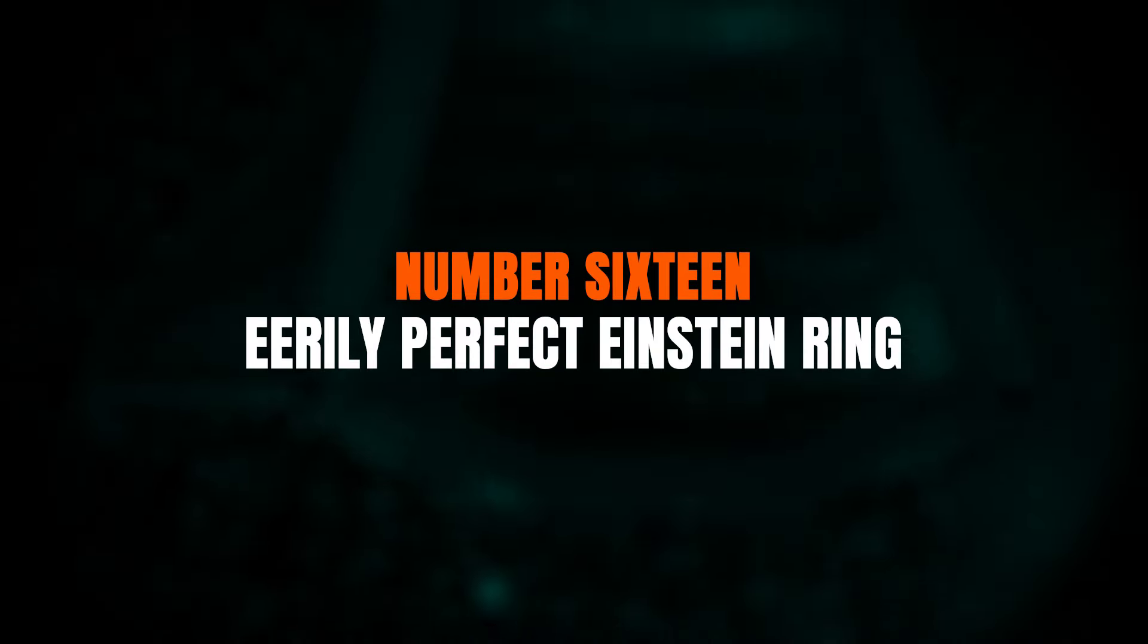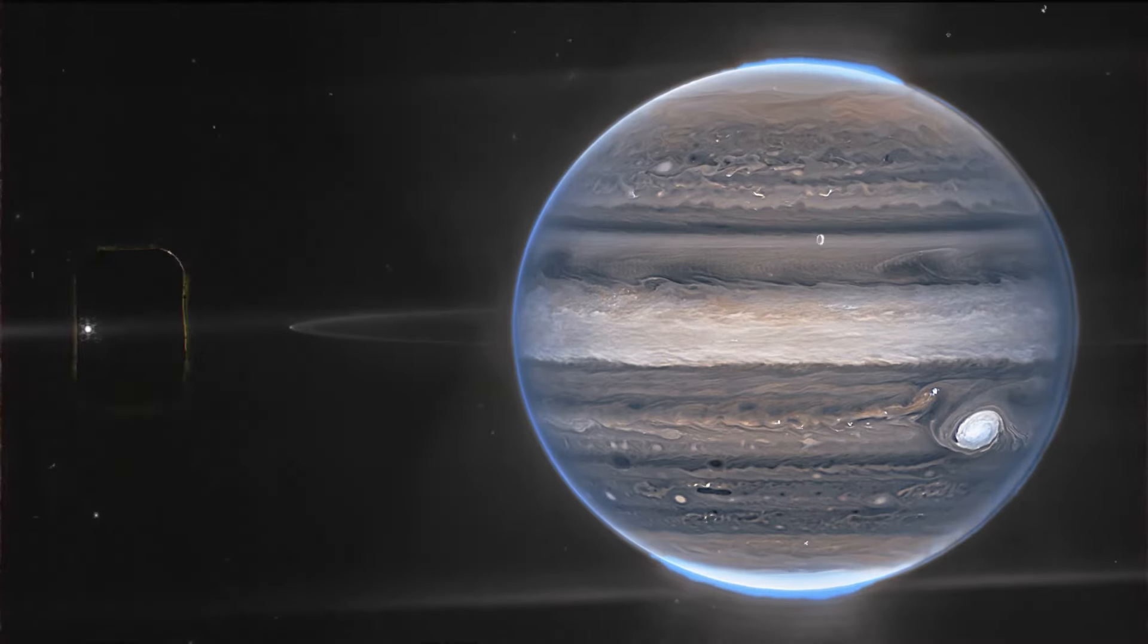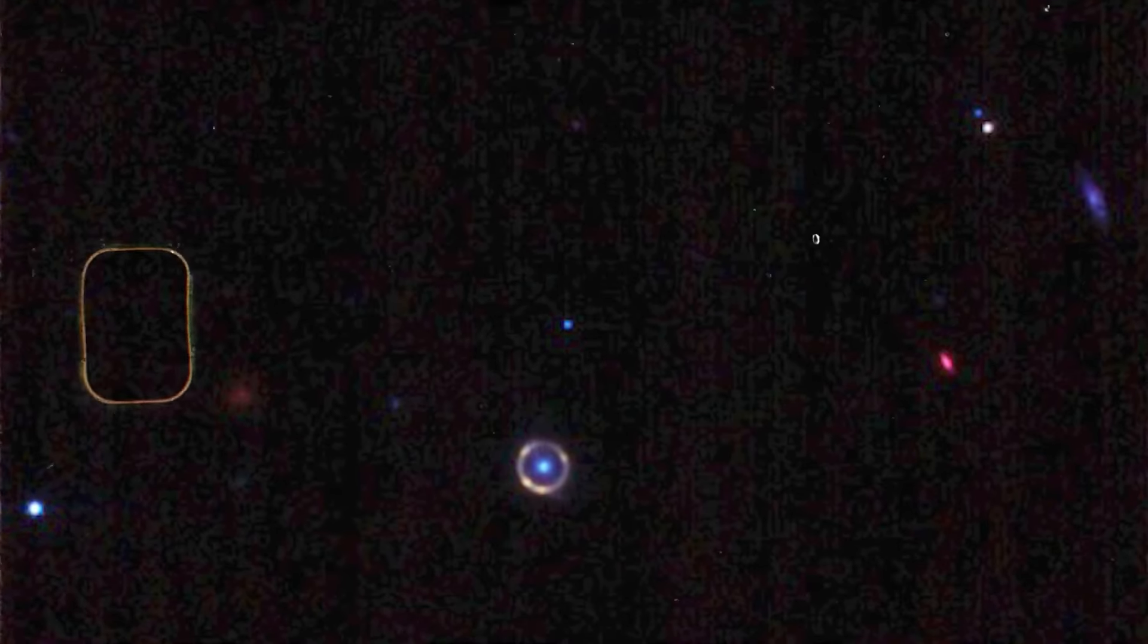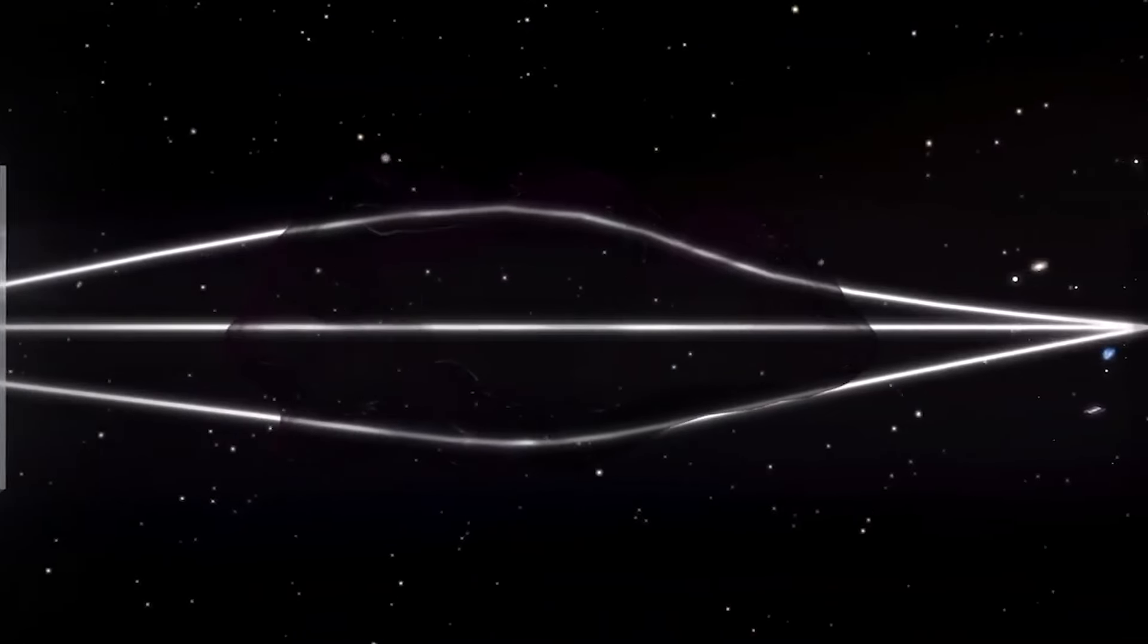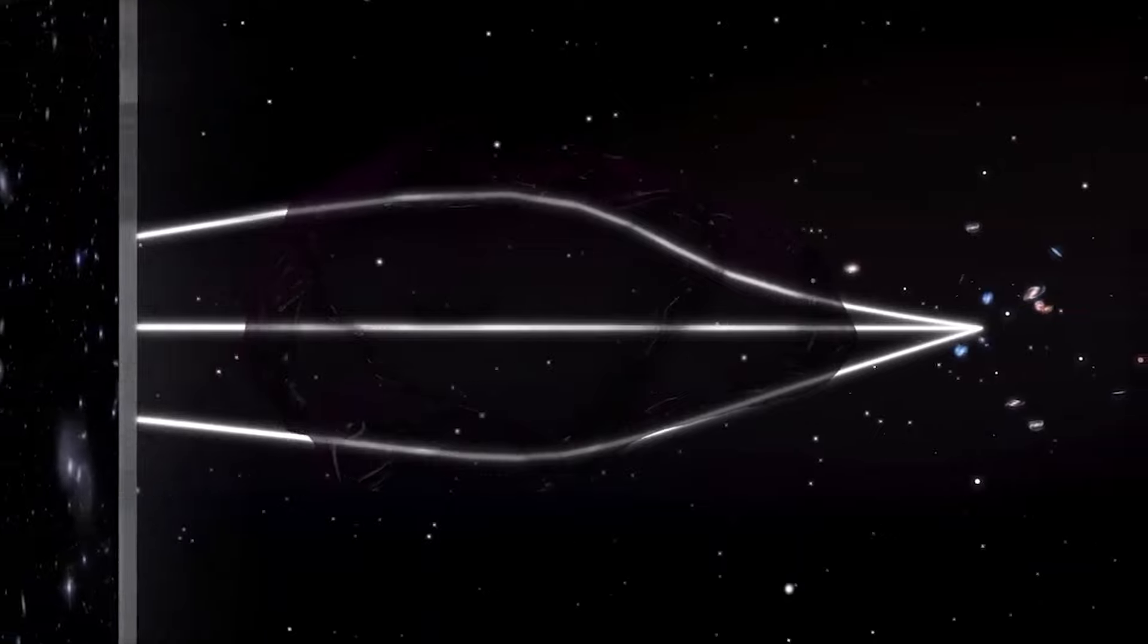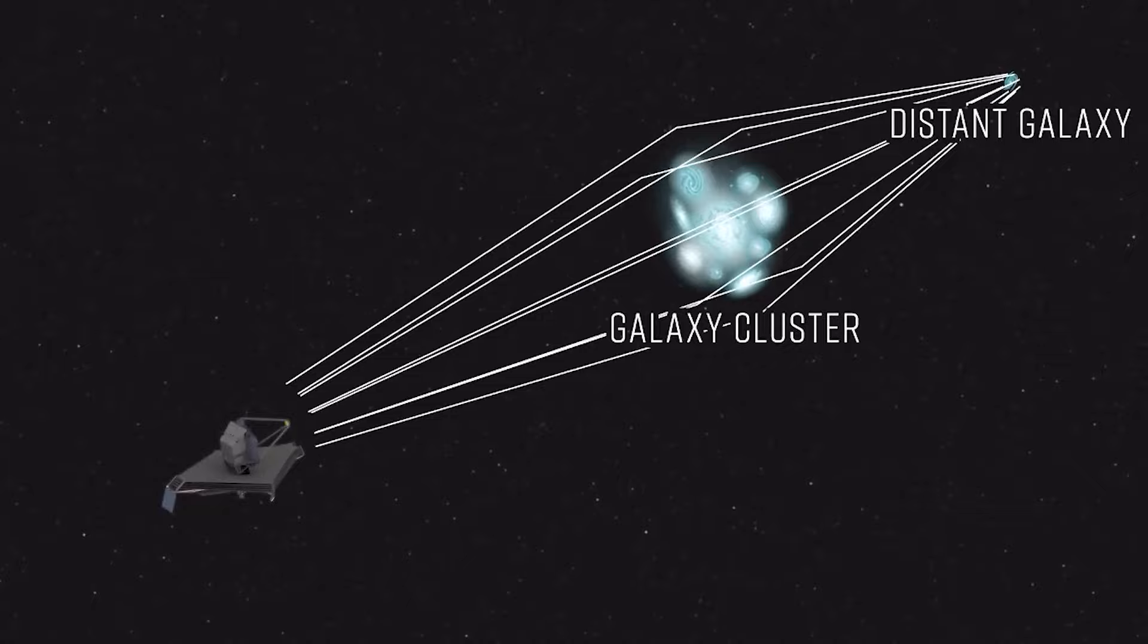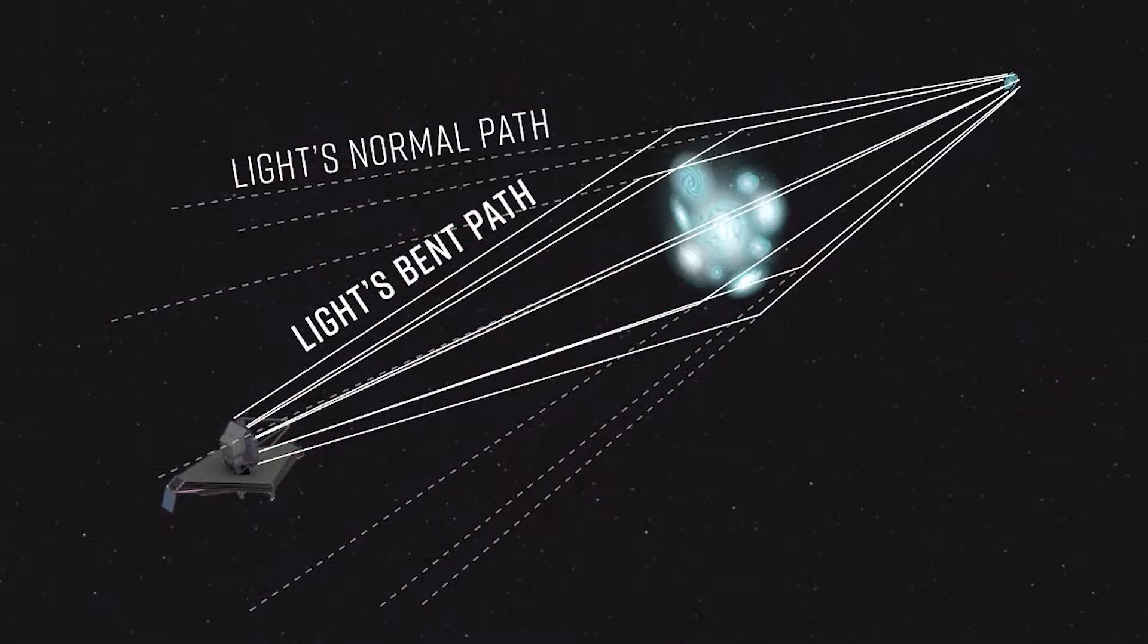Number 16. Einstein ring. The James Webb telescope shattered yet another cosmic distance record with its discovery of an incredible Einstein ring. This phenomenon occurs when the light from a distant galaxy is warped by the gravity of a dense foreground galaxy, creating a stunning, ring-like appearance. But how distant is this gravitational lens? A staggering 21 billion light-years away. Given that the universe is 13.8 billion years old, this means that the light from this galaxy has travelled nearly twice that distance due to the expansion of the cosmos. Mind-blowing, right?